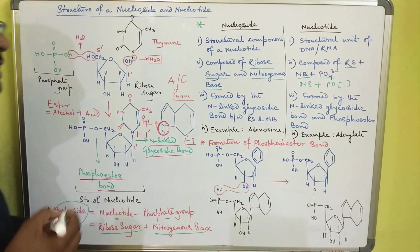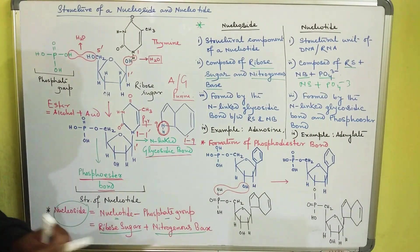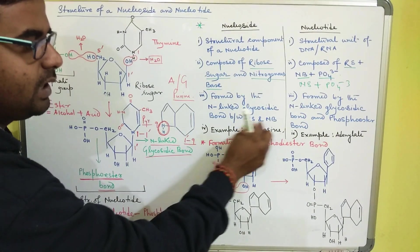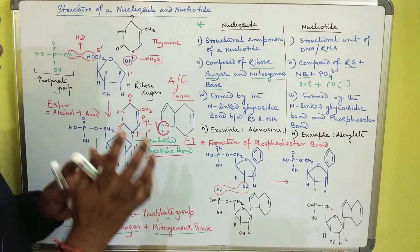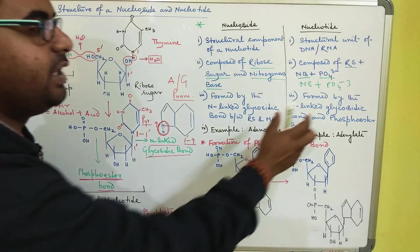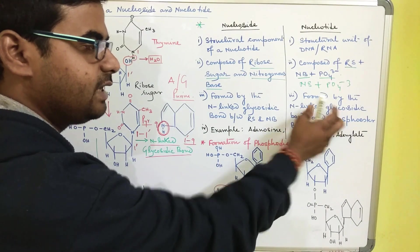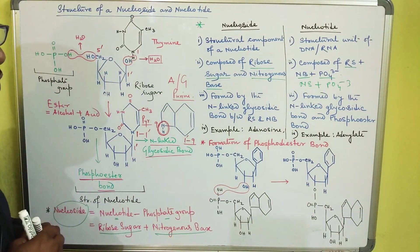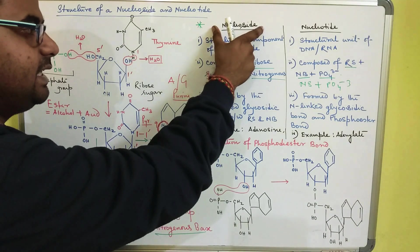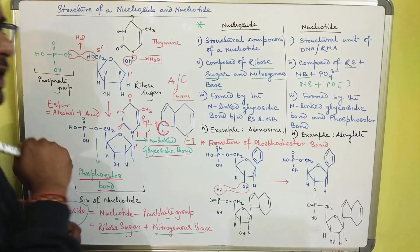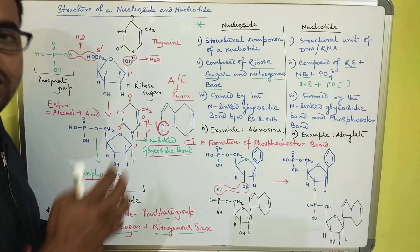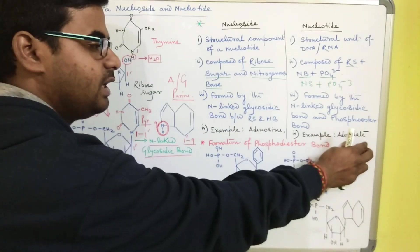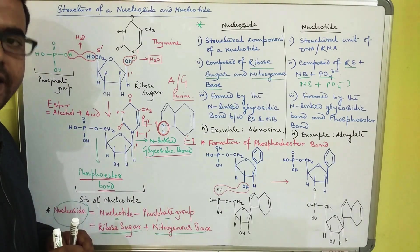The third point: a nucleoside is formed only by the N-linked glycosidic bond between the ribose sugar and the nitrogenous base, while nucleotide formation requires both the N-linked glycosidic bond and the phosphomonoester bond. Nucleosides are termed as adenosine or guanosine, while a nucleotide is called adenylate or adenylic acid because the phosphate group is attached to the adenosine.